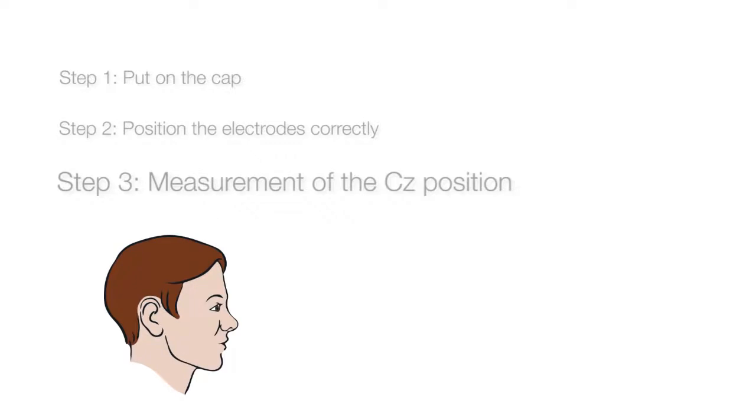The frontal electrodes FP1, FPZ, and FP2 should be positioned at 10% of the nasion-inion distance above the nasion point.